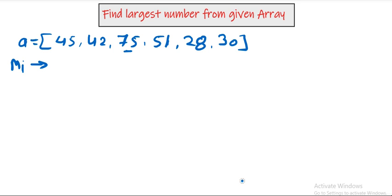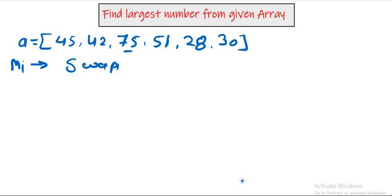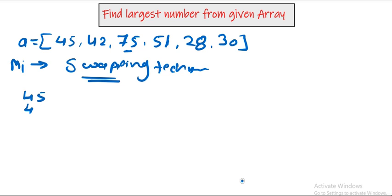Method 1 uses the swapping technique. What I will do is write down the items: 45, 42, 75, 51, 28, and 30. I will take the first index of the array, which is index 0, with the value 45.